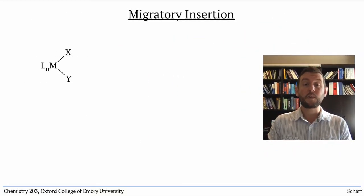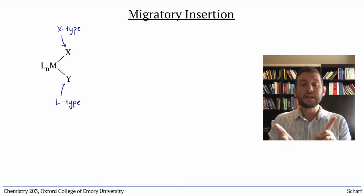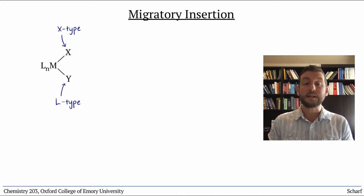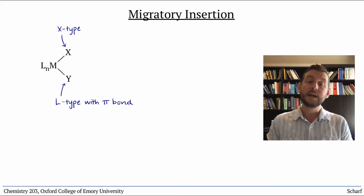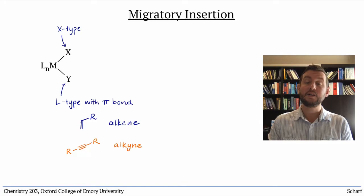Migratory insertion can occur when one X-type ligand and one L-type ligand are adjacent to each other on metal. Usually the L-type ligand needs at least one pi bond near the metal, and is most commonly either an alkene, an alkyne, or carbon monoxide.